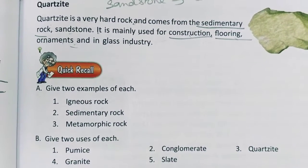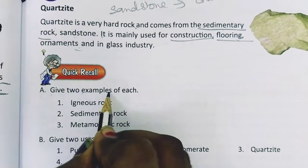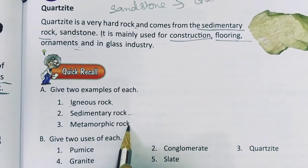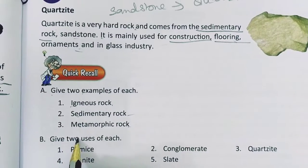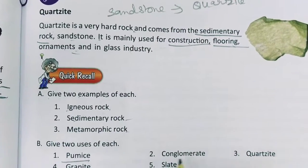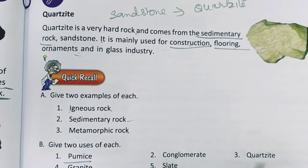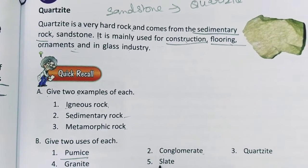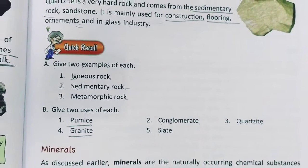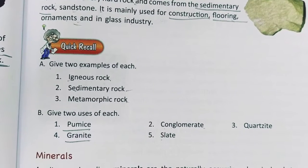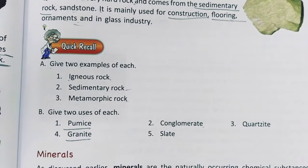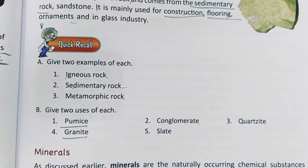So those are our types of rocks — igneous rock, sedimentary rock, and metamorphic rock — with two examples of each. Okay, so this is all for today. I hope you understood the topic easily. In our next video, we will talk about minerals — metallic and non-metallic minerals. Have a great day. Stay home, stay safe.